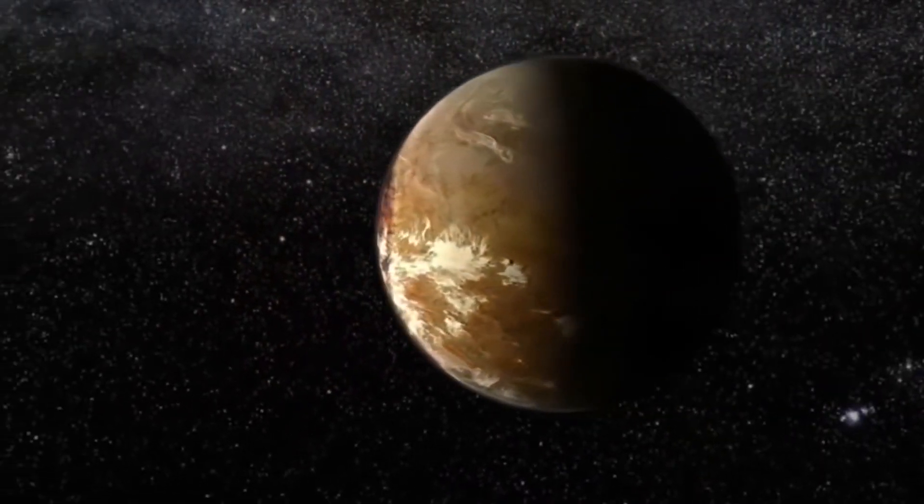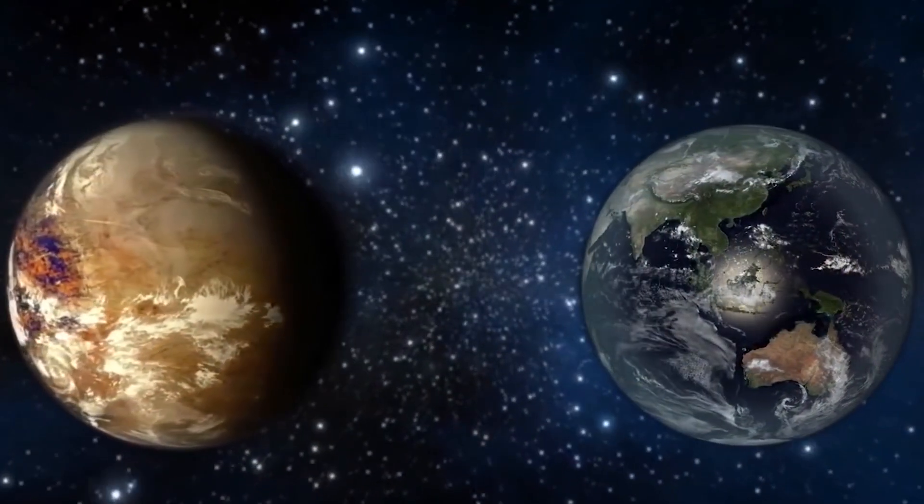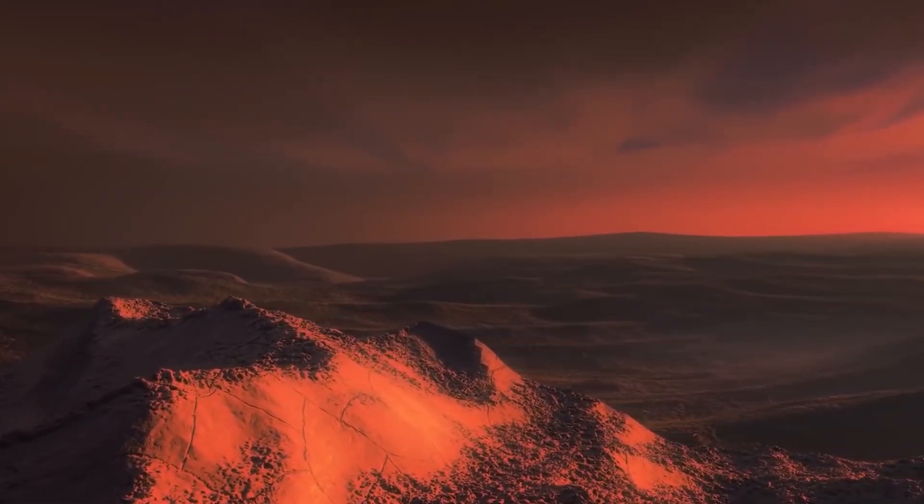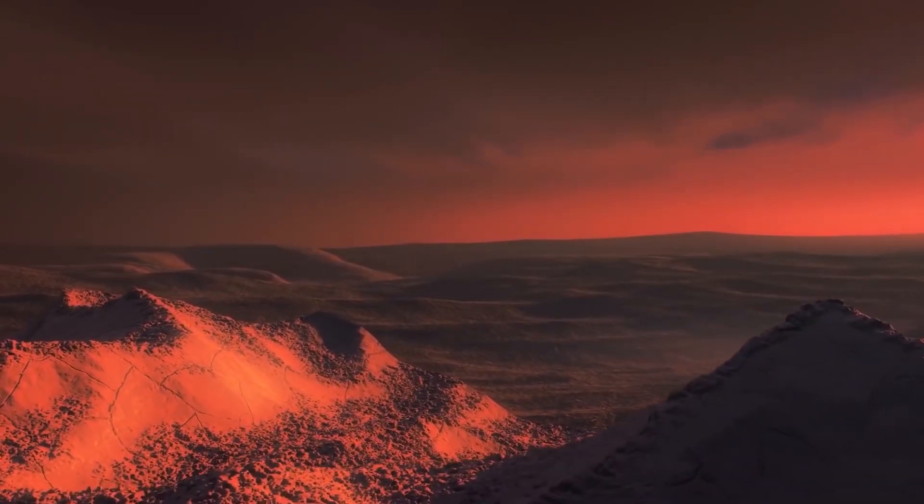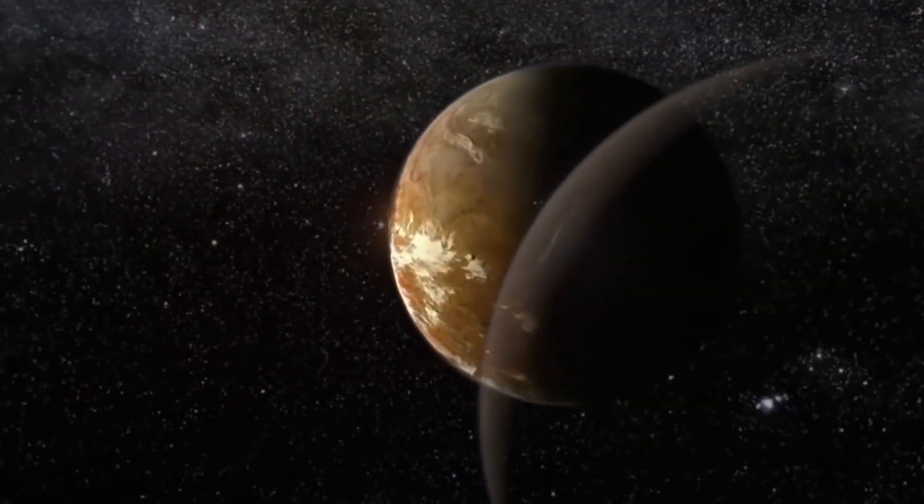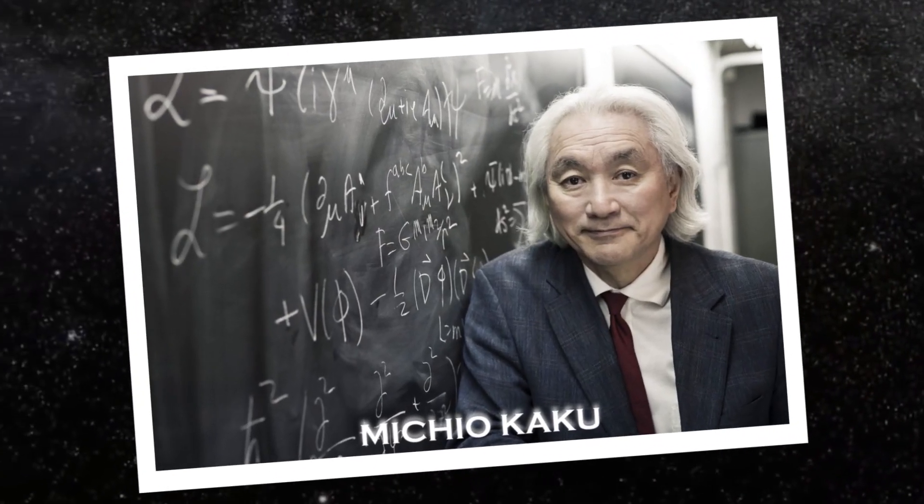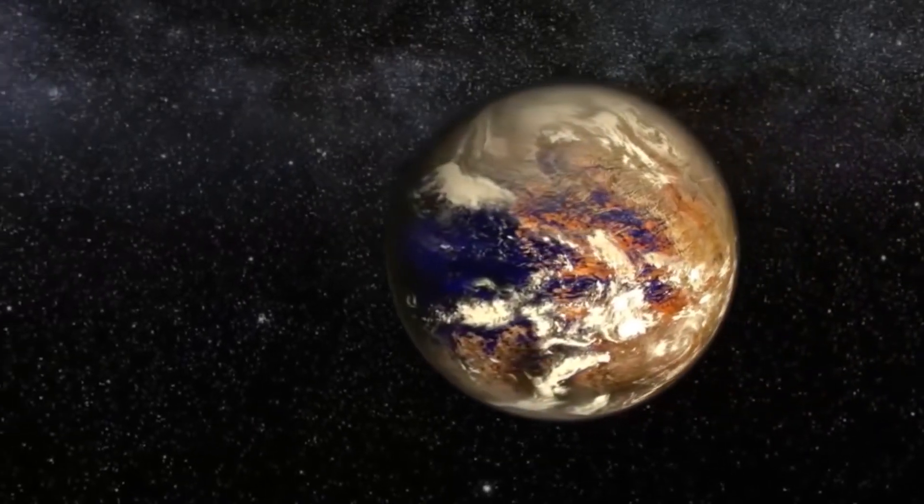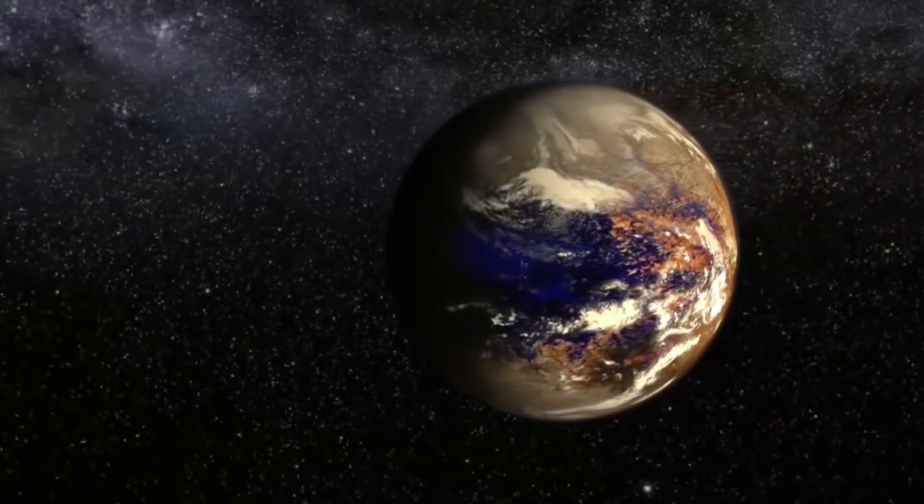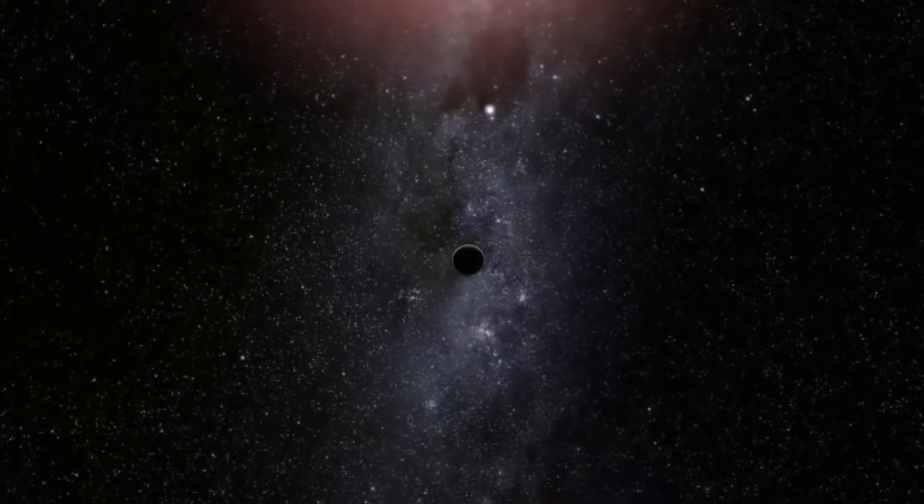Proxima Centauri b is a planet orbiting the closest star to Earth. It is ironic that the planet Centauri b looks so much like Earth and is so close to us. The scientific community has been surprised by Michio Kaku's discovery of planets even more favorable for life than Earth in our galaxy, known as habitable exoplanets.